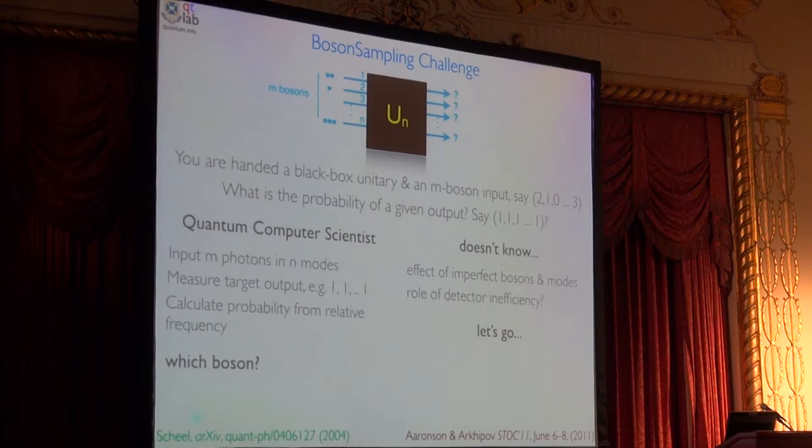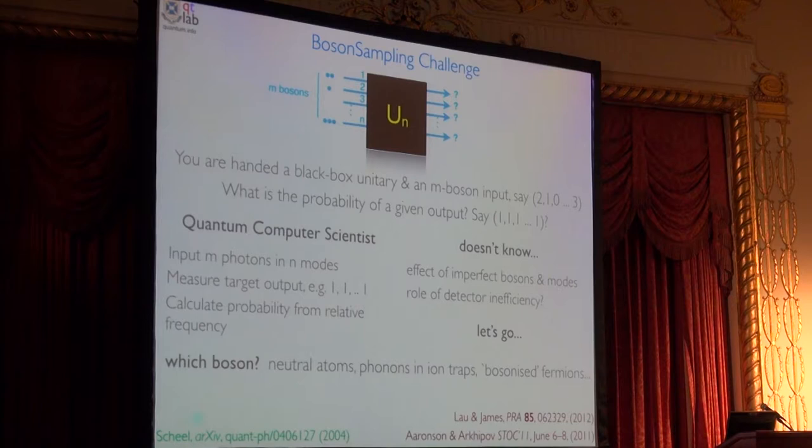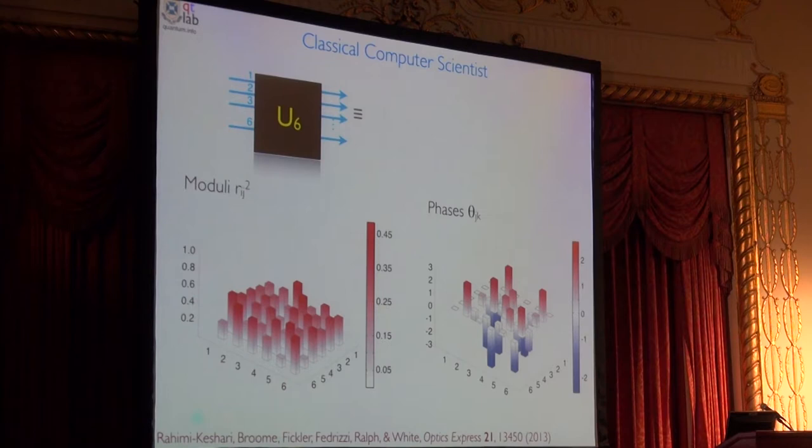Now, particularly for this audience, which boson? Any boson will do. Neutral atoms, phonons and ion traps, bosonized fermions, superconductors, anything. We did photons because A, we're a photon lab and they also have the best coherence of any boson in large networks. But if you wanted to scale this and you want to try and beat the photon guys and you're a neutral atoms or an ion group, come talk to me afterwards because we've got ideas.